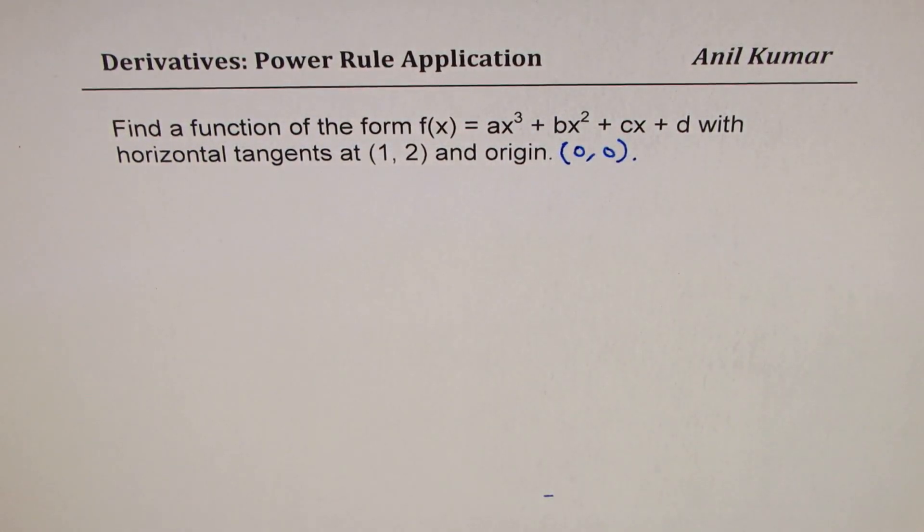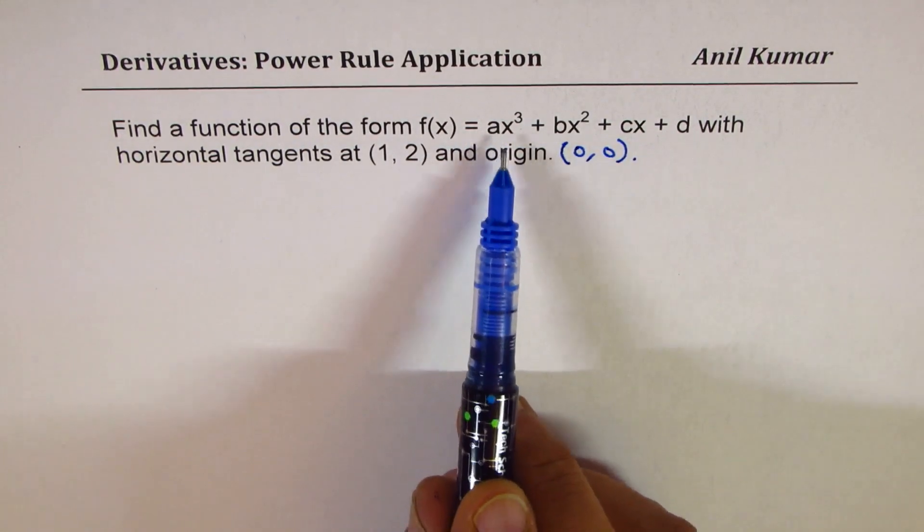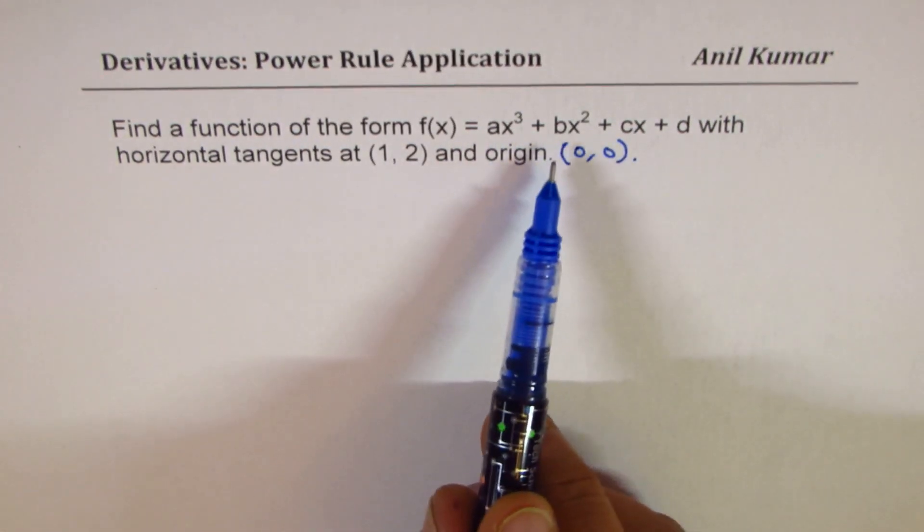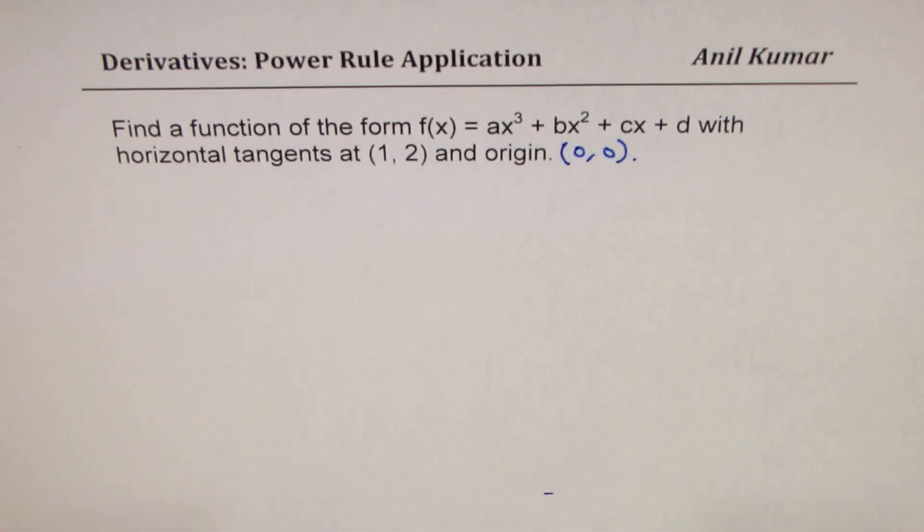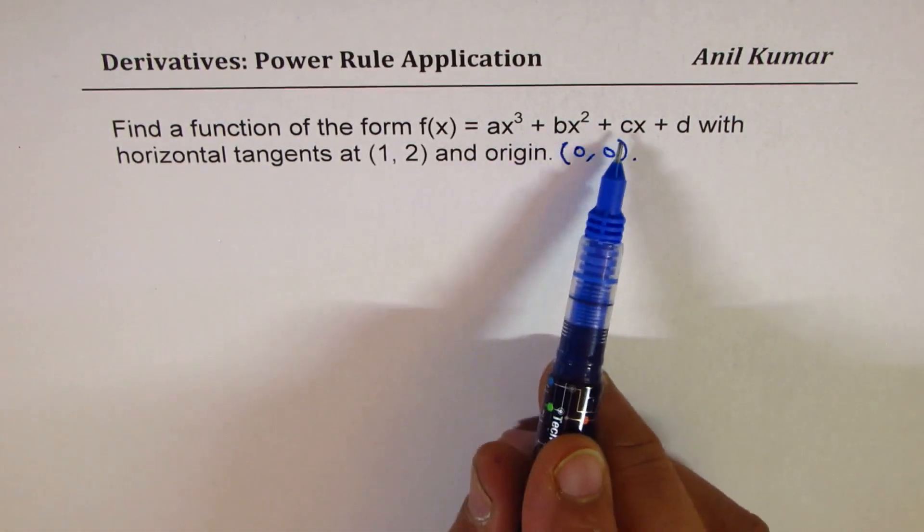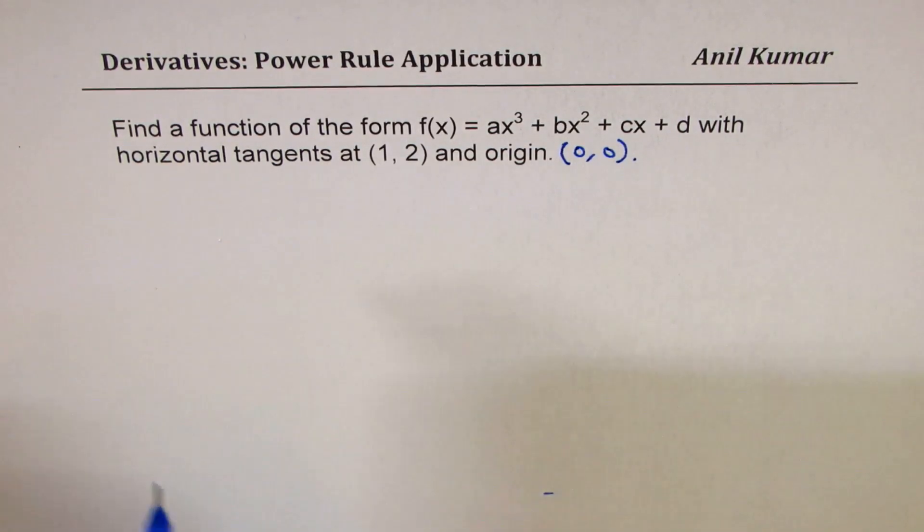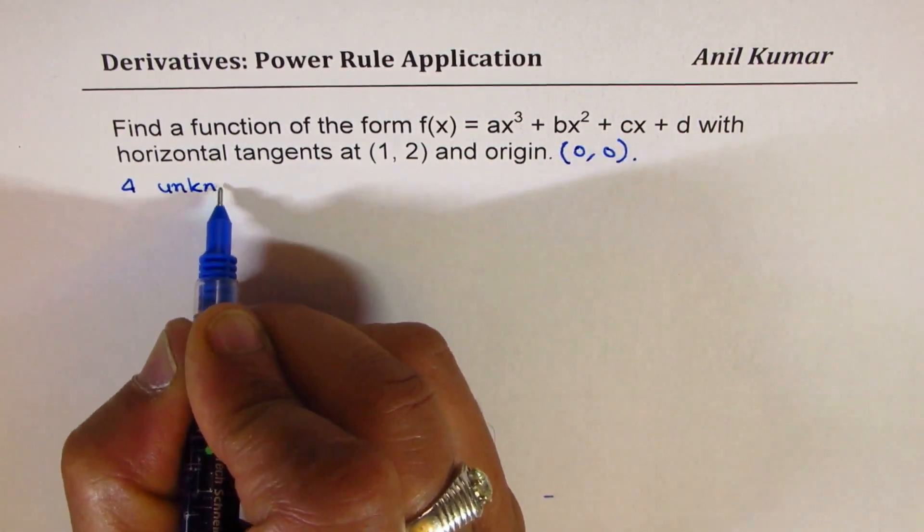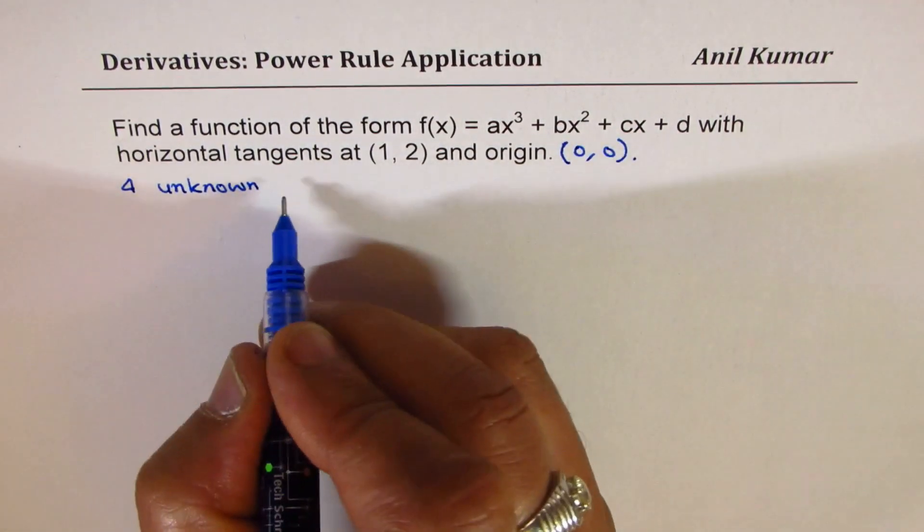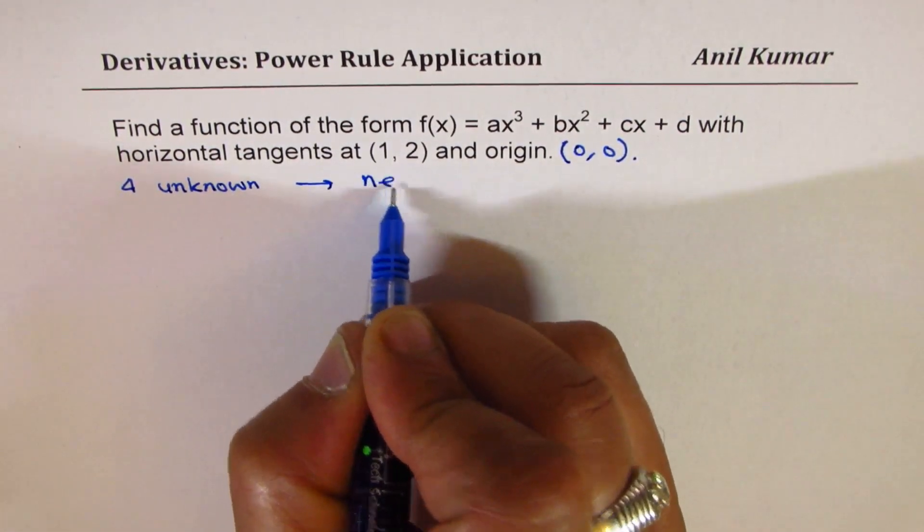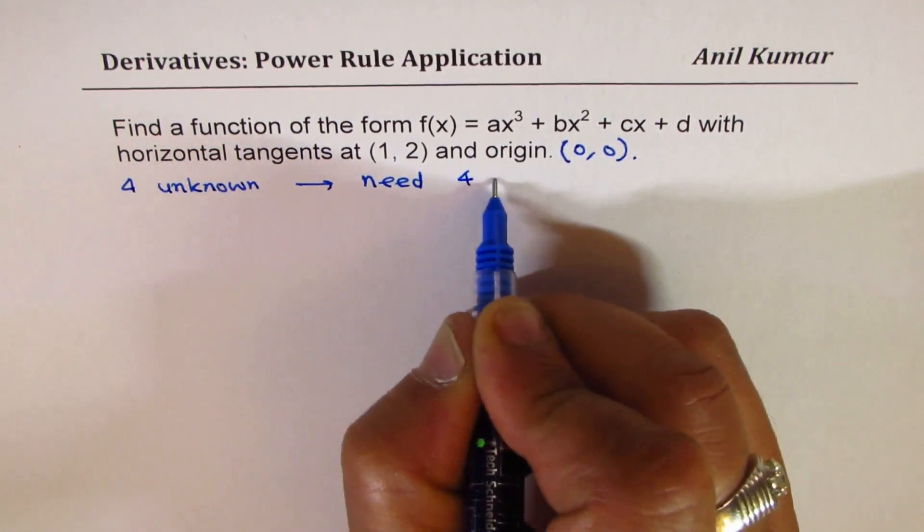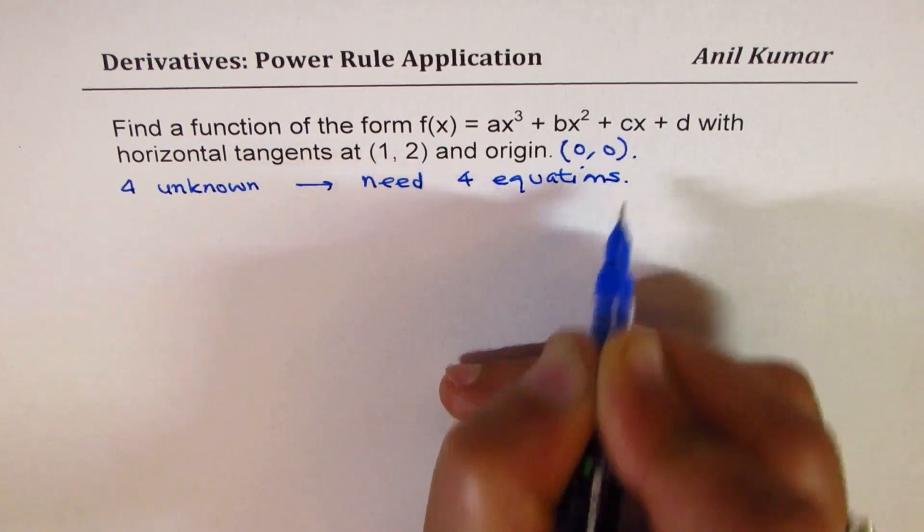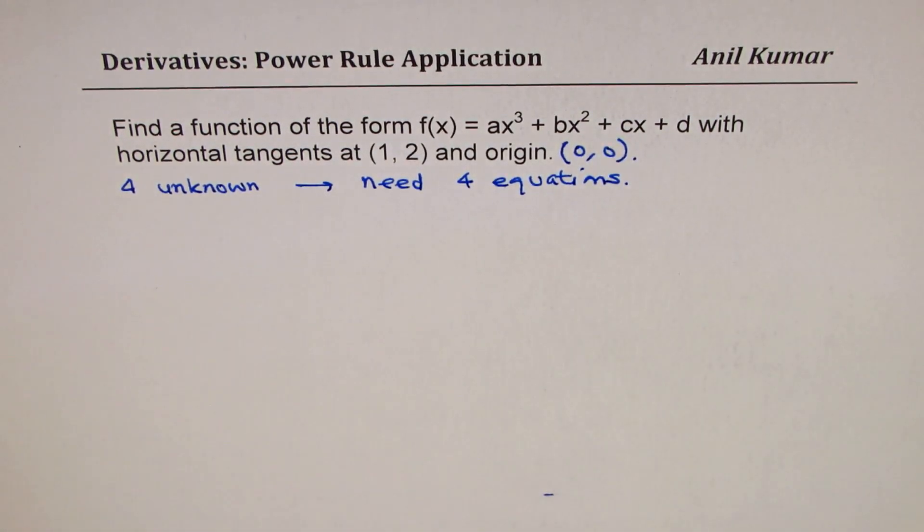So we are given an equation which is cubic polynomial with four unknowns. To solve this question, we need at least four equations. Four unknowns: 1, 2, 3, 4. So remember, we have four unknowns, so that means we need four equations.